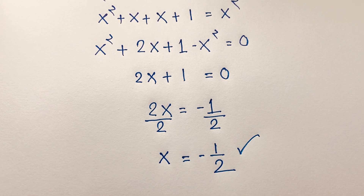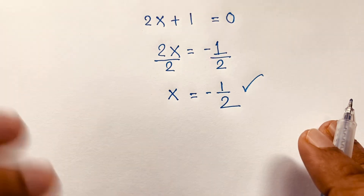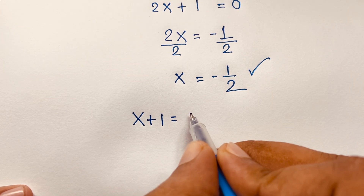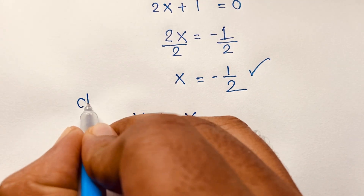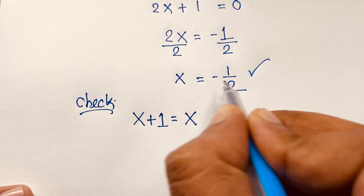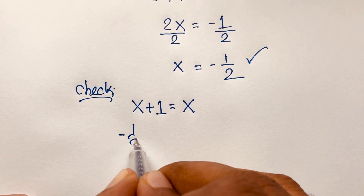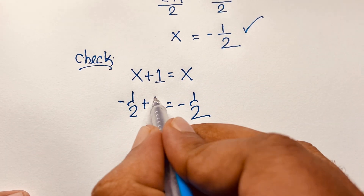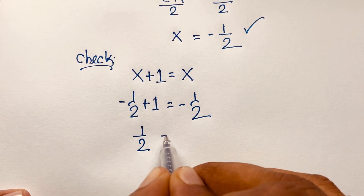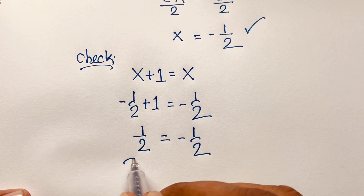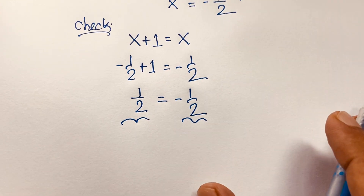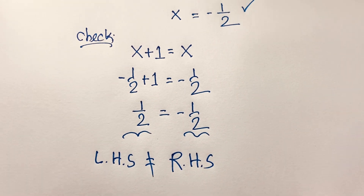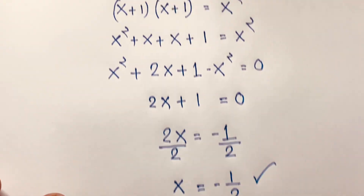This is our final answer in this tricky math. Is it right? Let's verify. Our question is x plus 1 is equal to x. Now x is equal to negative one-half, so substituting: negative one-half plus 1 is equal to negative one-half. Now 1 minus one-half is positive one-half, but the right-hand side is negative one-half. Both sides are not equal, so there is no solution in this math question.